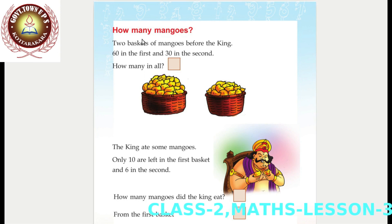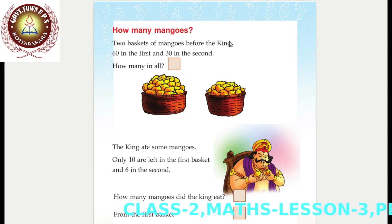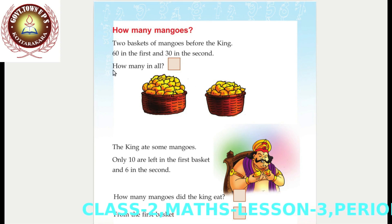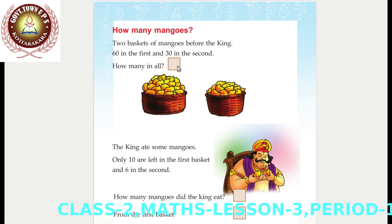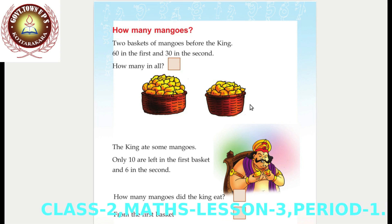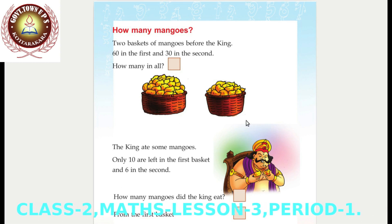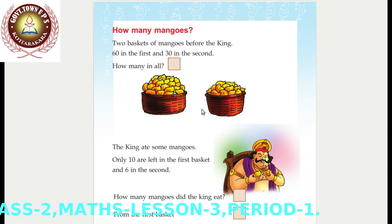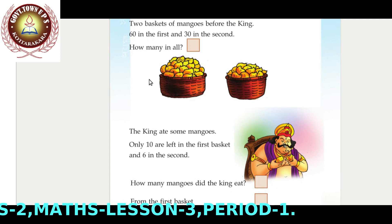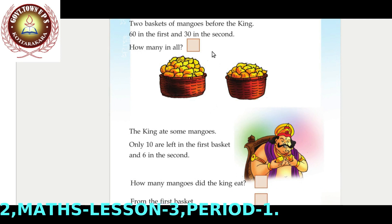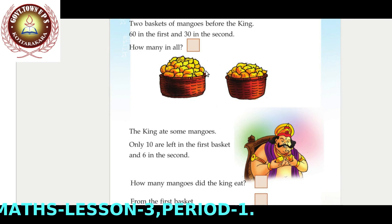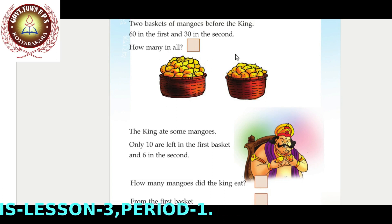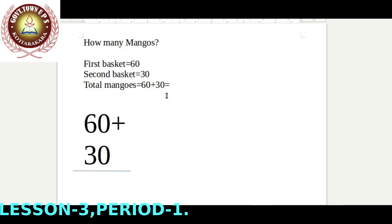How many mangoes? Two baskets of mangoes before the king. Sixty in the first and thirty in the second. How many in all? How we solve this problem and find the answer? We find how many mangoes in all in the two baskets. How we find the total mangoes in these two baskets? We find the total by adding the mangoes of the first basket and second basket.